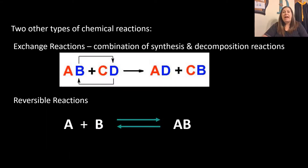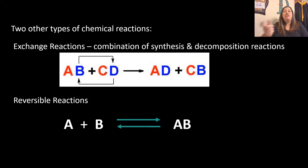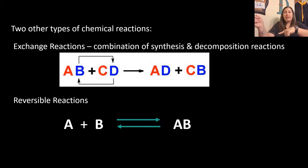Two other types of reactions also occur. Exchange reactions are where synthesis and decomposition happen at the same time — we break bonds to form new bonds, like changing dance partners. A and B were together, C and D were together, and then they switch: A with D and C with B. Reversible reactions have arrows going both ways, indicating the reaction can move back and forth — building up, breaking apart, building up again in a constant cycle.